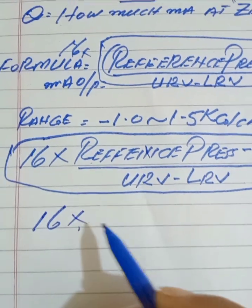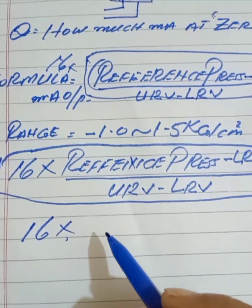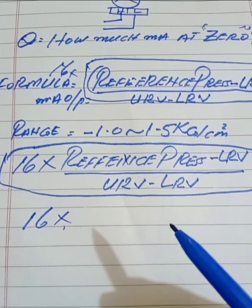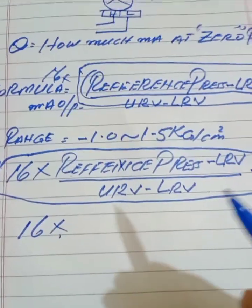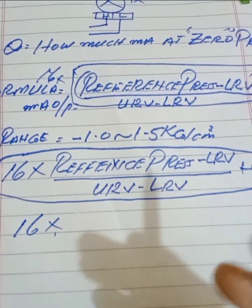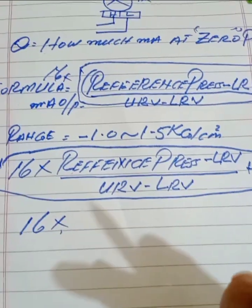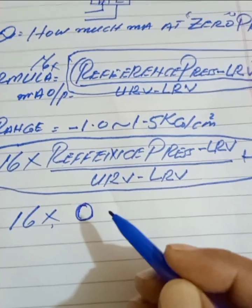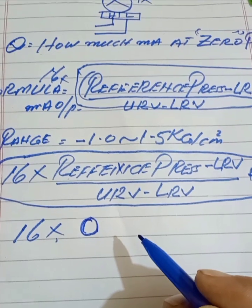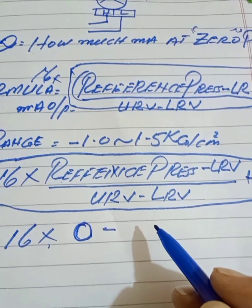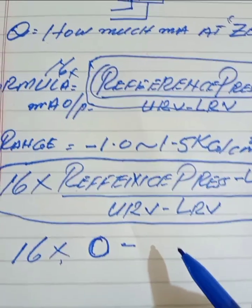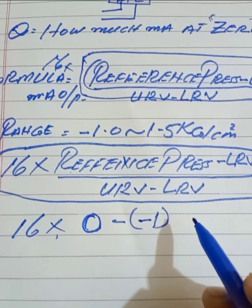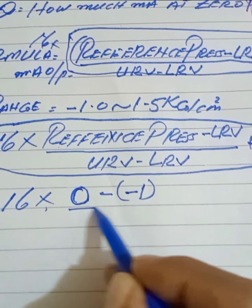We have 16 into our reference pressure. Suppose our transmitter, which has already been calibrated as an absolute pressure transmitter, is now under atmospheric pressure — either in the field or in the workshop after calibration. The atmospheric ambient pressure applied to the transmitter is zero. So our reference pressure is zero. Zero minus our LRV, which is minus 1.0. Our LRV is minus one.